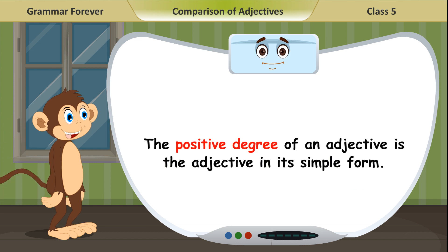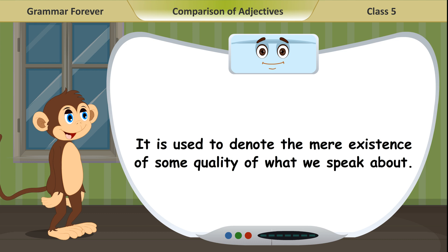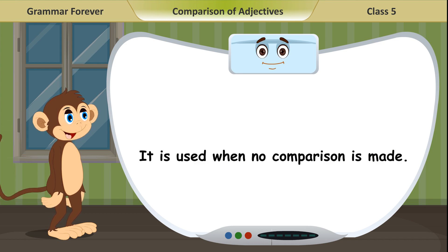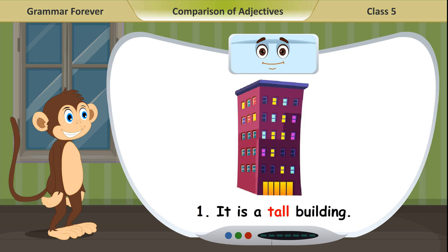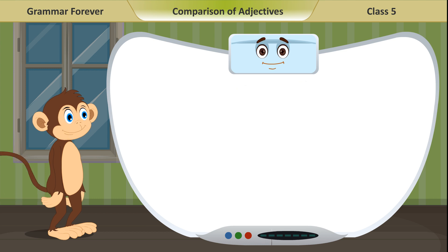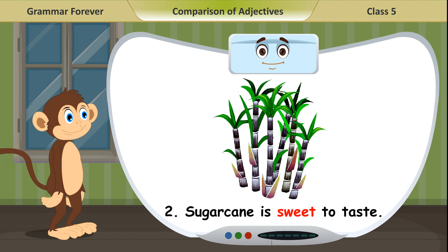The positive degree of an adjective is the adjective in its simple form. It is used to denote the mere existence of some quality of what we speak about. It is used when no comparison is made. Examples: 1. It is a tall building. 2. Sugarcane is sweet to taste.